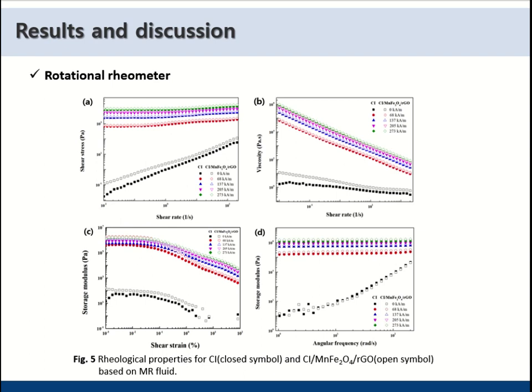C represents a storage modulus graph based on shear strain under five different magnetic field strengths.